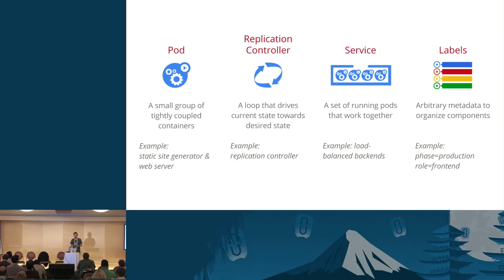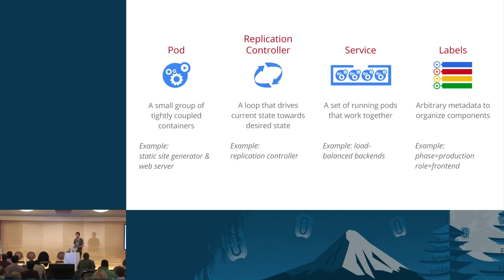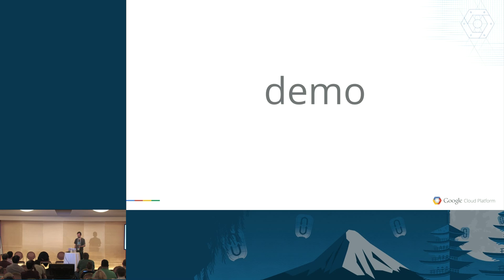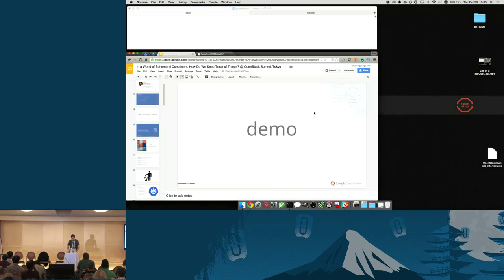Labels — you can attach labels to any resource, but essentially you add these to pods and use them as part of a selector when you define a service. When you create the service, it says 'my app is Nginx or whatever,' and it selects all the pods using the labels to know which pods to actually route traffic to. It's a declarative way of managing a cluster of machines — you basically say 'here's the desired state of the cluster I want to have,' and it figures out how to make it so.